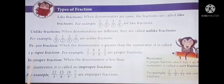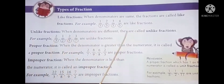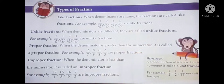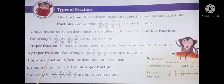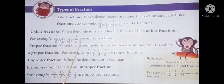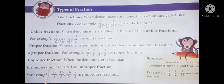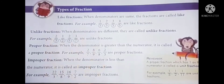Next is unlike fractions. When denominators are different, they are called unlike fractions. For example, two by three, one by two, two by five, three by seven. In all these fractions, there are non-common denominators. So these fractions are called unlike fractions.